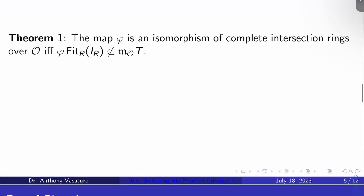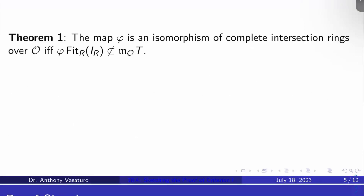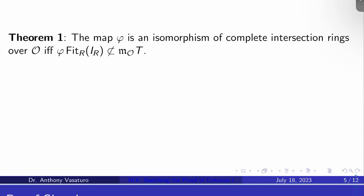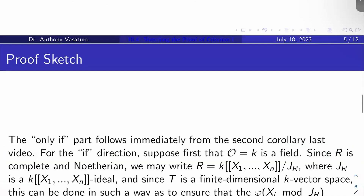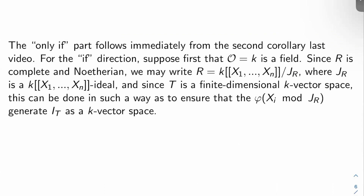The main way we're going to prove Criterion 1 is with this so-called Theorem 1, where we reimagine the problem in terms of Fitting ideals. Theorem 1 states: the map phi in the commutative triangle is an isomorphism of complete intersection rings over O if and only if phi of the R-Fitting ideal of I sub R is not contained in M sub O times T, where M sub O is the unique maximal ideal of O. We'll first prove Theorem 1, then use it to prove Criterion 1.